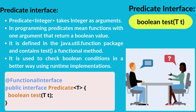What is the Predicate interface? Predicate takes an integer as an argument. In programming, predicates are functions with one argument that return a boolean value. It is defined in the java.util.function package and contains the test() functional method. It is used to check boolean conditions in a better way using runtime implementations.